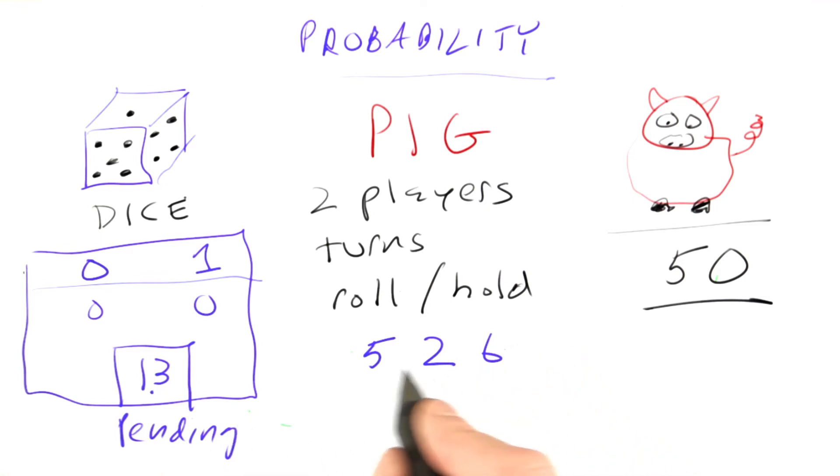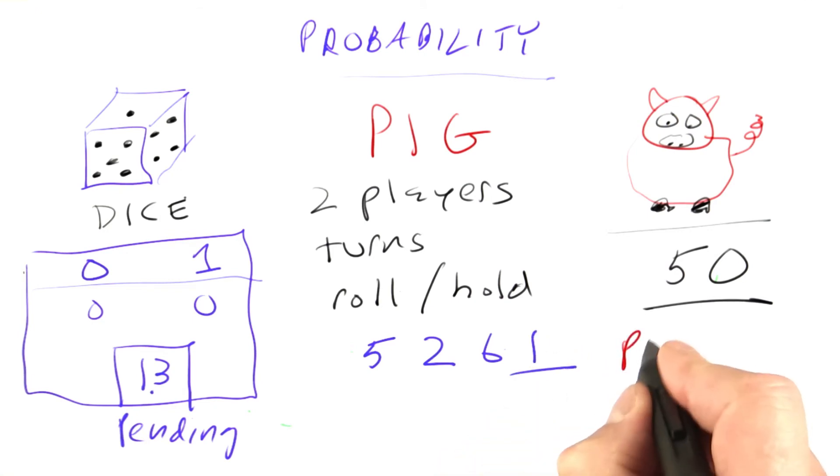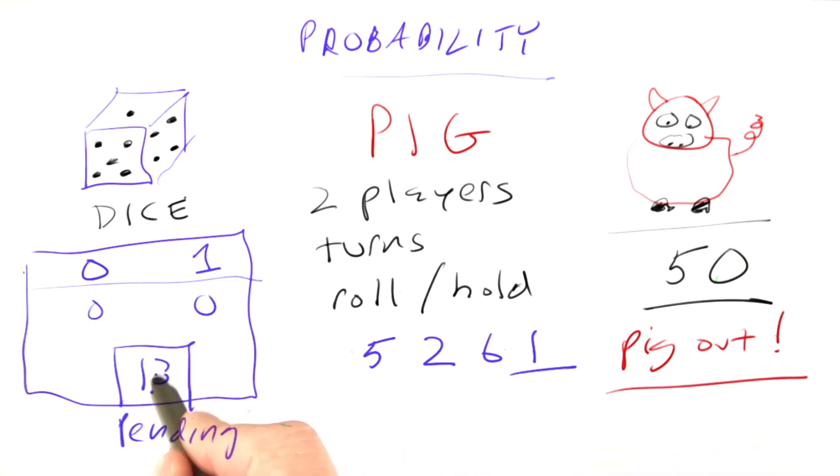I'm going great, so I roll again, and this time I get a 1. A 1 is special. A 1 is called a pig out. When you roll a pig out, it means you lose all the pending points, and for your hand you score not this total but just the 1. My score would be just the 1.